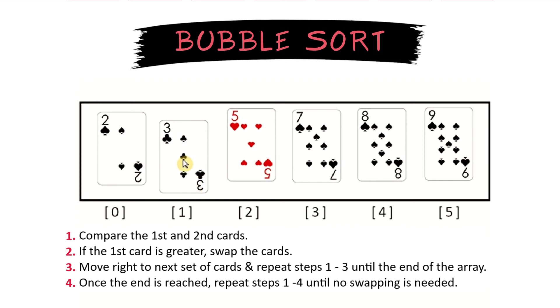Lastly, one more check. Is 2 less than 3? It is, so nothing to swap. And now we have an array that is ordered or sorted from least to greatest, all using the bubble sort algorithm.